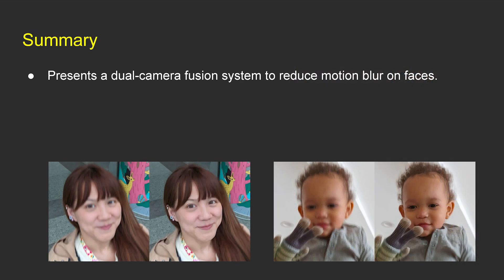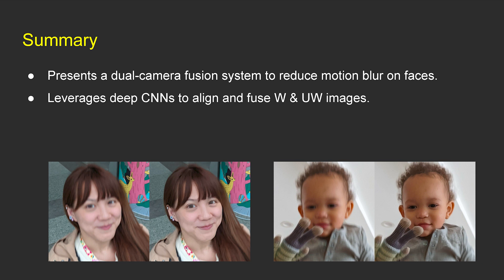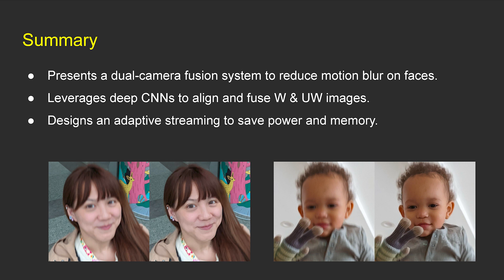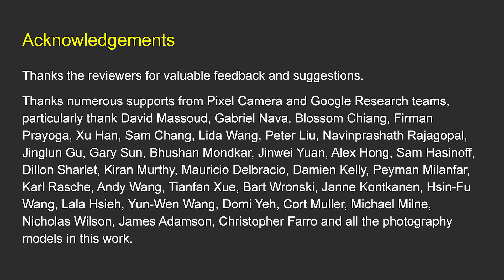In conclusion, we have presented a robust dual-camera fusion system to de-blur faces on mobile phones. We learn deep CNNs to align and fuse wide and ultra-wide images for de-blurring, and design an adaptive streaming system to turn on the ultra-wide camera dynamically for saving power and memory usage. Our method outperforms existing academic and commercial solutions on face de-blurring, and this system can run at an interactive rate on Pixel 6 and 6 Pro. Finally, we thank all the colleagues from the Pixel camera team and Google Research team for their support on developing, testing, and delivering this feature to Google Pixel.